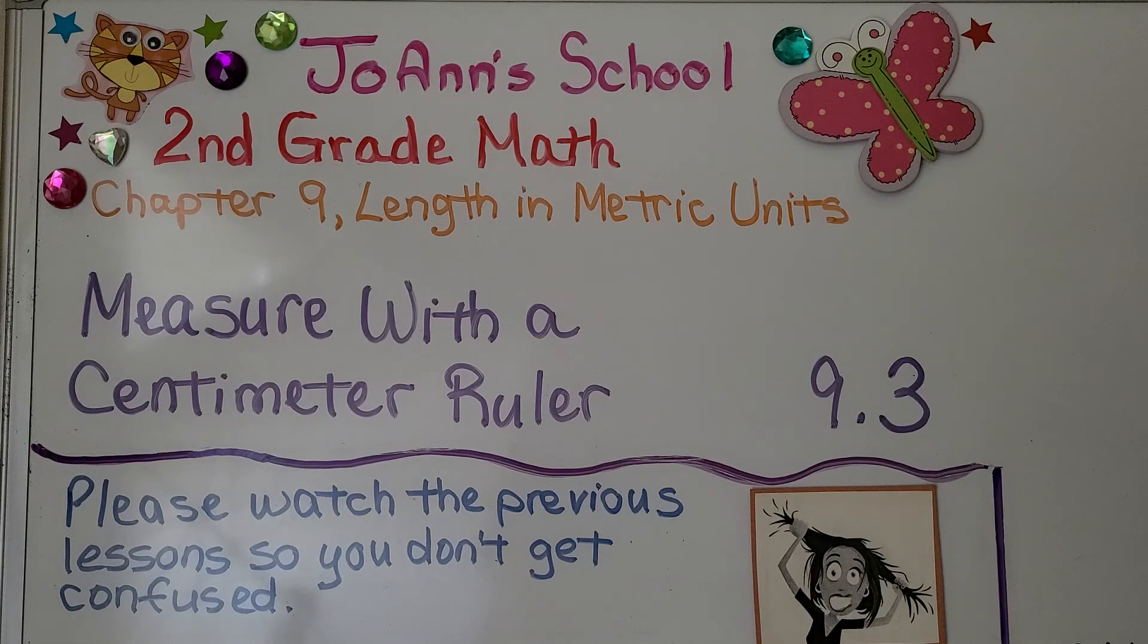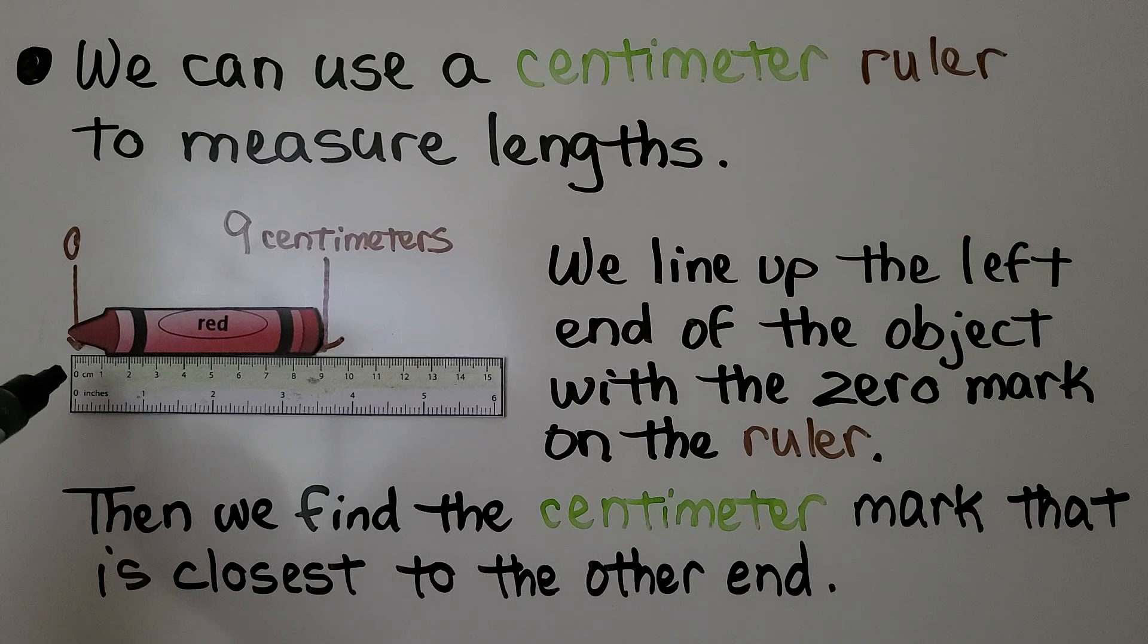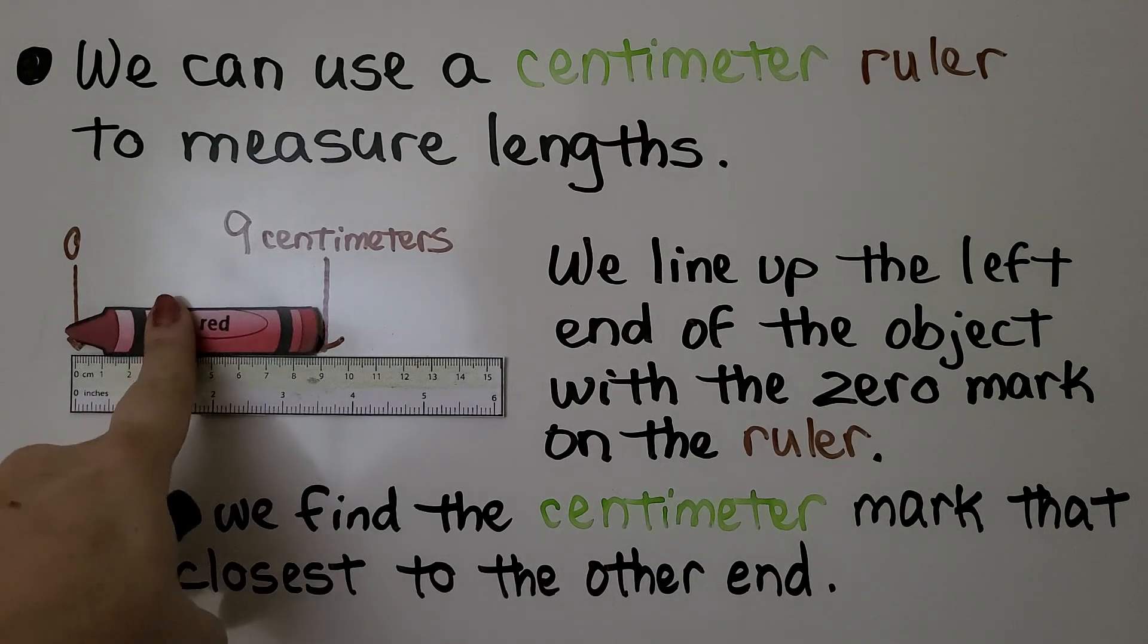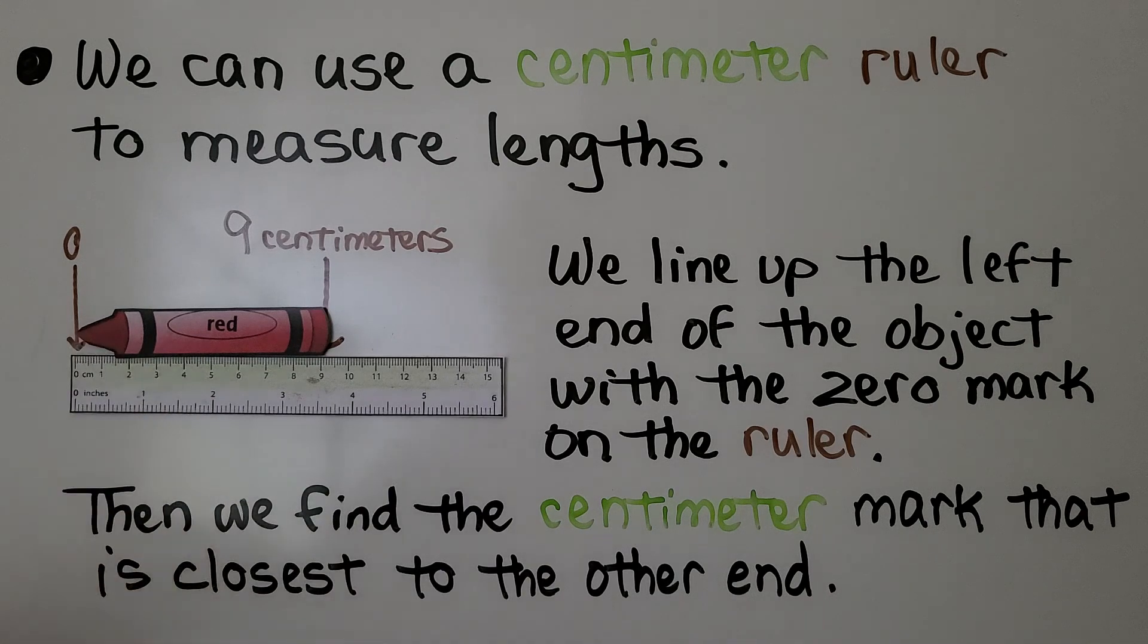Lesson 9.3: Measure with a Centimeter Ruler. We can use a centimeter ruler to measure lengths. We line up the left end of the object with the zero mark on the ruler, so right here is the zero mark, and we line this up so that it's on the zero mark right here.